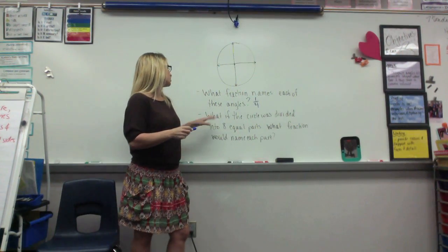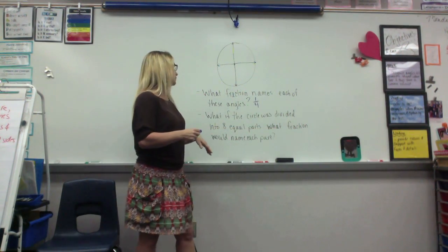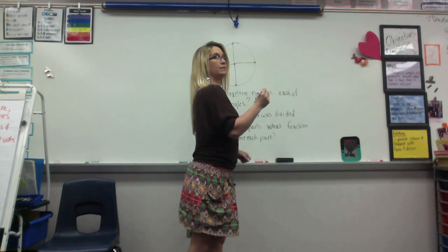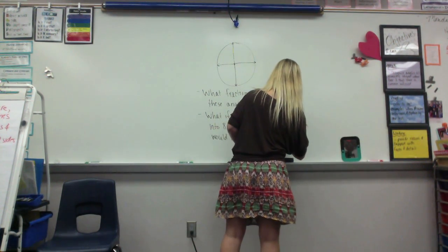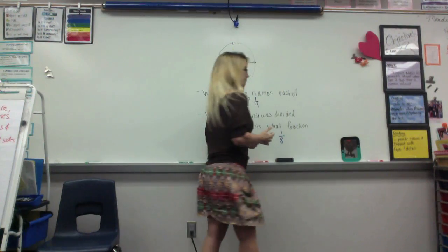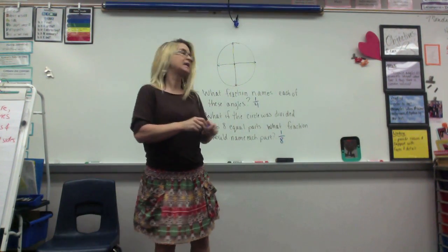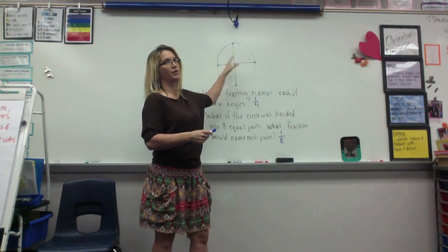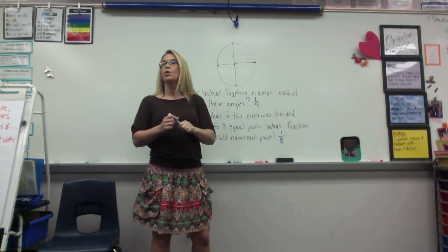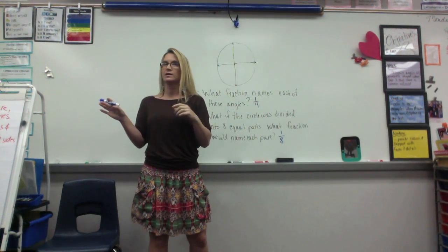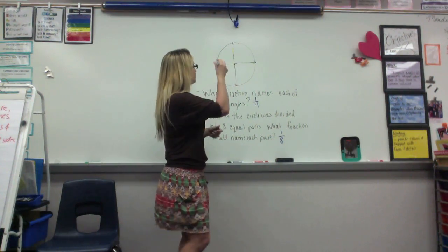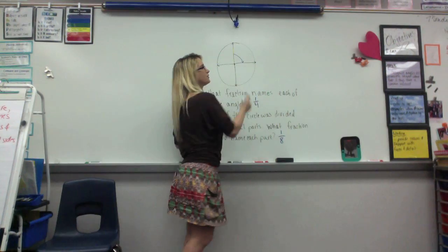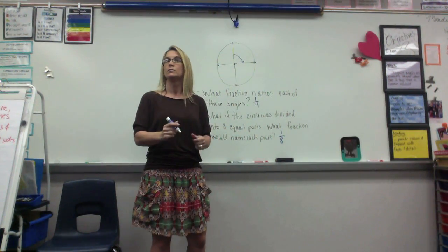What if the circle is divided into eight equal parts? What fraction would name each part, class? One-eighth. One-eighth would name each part. In this case, each quarter section is one-fourth. Remember, just to review yesterday's lesson — if I was starting at this point and going to here, how much of a turn was that? One-fourth.